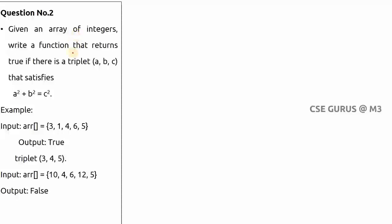The input is an array of integers, and we need to find if any triplet exists — meaning three values a, b, c that satisfy a² + b² = c². For example, consider an array of five integers: there is a triplet (3, 4, 5), so we first print true and then print the triplet.